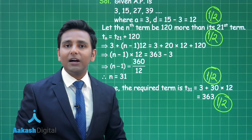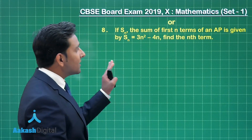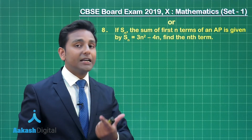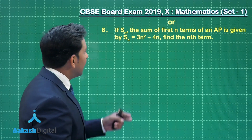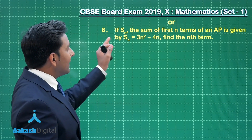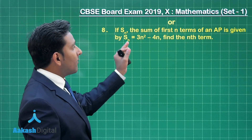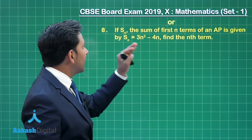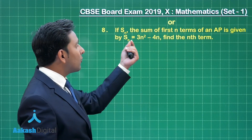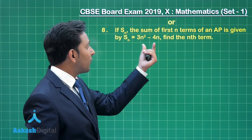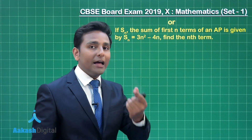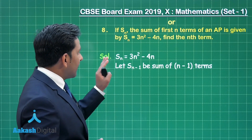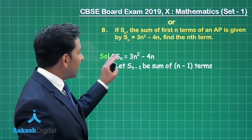Now let us discuss the optional part of this question, which is also from arithmetic progression, based on the sum of first n terms. The question is: if Sn, the sum of first n terms of the given AP, is given by Sn = 3n² minus 4n, then find the value of the nth term.